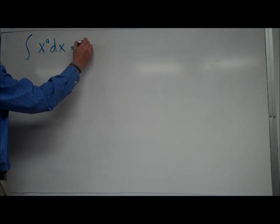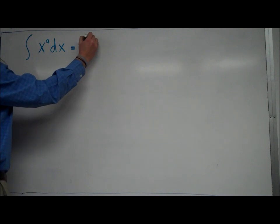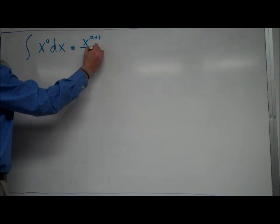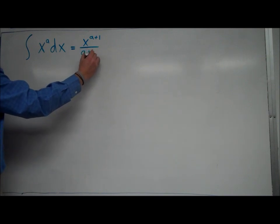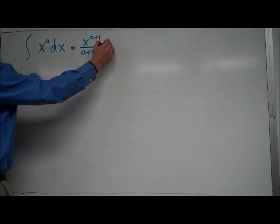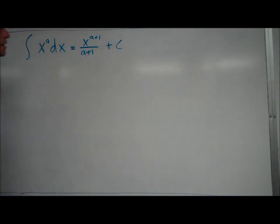So what it looks like is this. You add 1 to the exponent to make the exponent x to the a plus 1. And you then put whatever you got for that exponent on the bottom, a plus 1. And then I'm going to put a plus c here, and I'll talk about that plus c in a second.